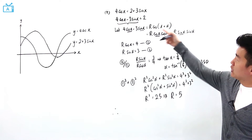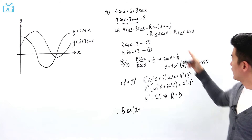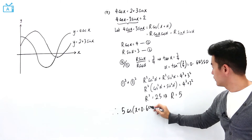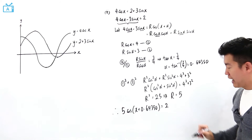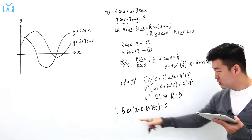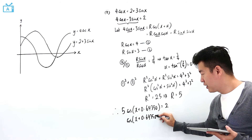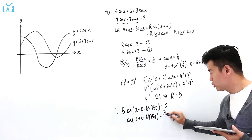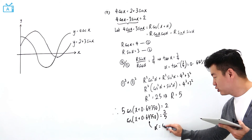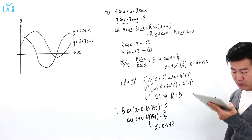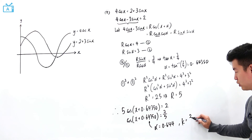So the expression is rewritten as 5 cos(x + 0.64350) = 2. The question wants the coefficient to be 1, so dividing both sides by 5 gives cos(x + 0.64350) = 2/5. Therefore α = 0.644 to 3 significant figures, and k = 2/5.